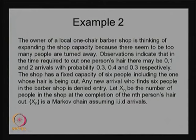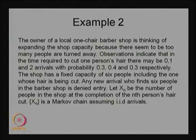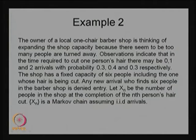Now I am going to define the random variable. Let Xn be the number of people in the shop at the completion of the nth person's haircut. This is a very different stochastic process — usually the parameter space is time, but here the parameter n is the person who leaves after the haircut, and the random variable is how many people are in the system when the nth person leaves. That count is measured at the departure time point.